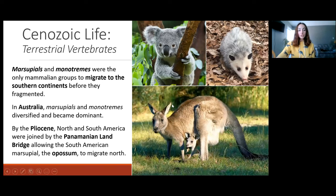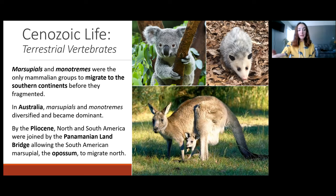Marsupials and monotremes — mammals that give birth to really underdeveloped young and then raise them in a pouch — were the only two mammalian groups to migrate to the southern continents before they fragmented. This meant that in Australia, marsupials and monotremes diversified and became dominant and still remain dominant. By the Pliocene, North and South America had been joined by the Panamanian land bridge, allowing South American marsupials such as possums to migrate north. Now possums are the most successful marsupial in North America.